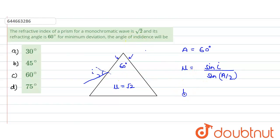So what is the value of μ? It is given as root 2. So root 2 would be equals to sine I divided by sine A by 2. A is 60, so it would be sine 30 degrees.